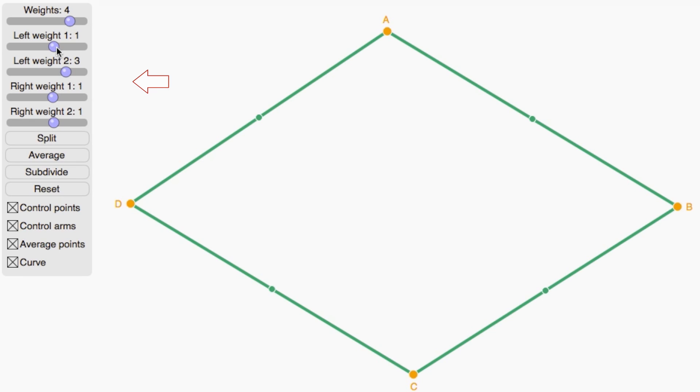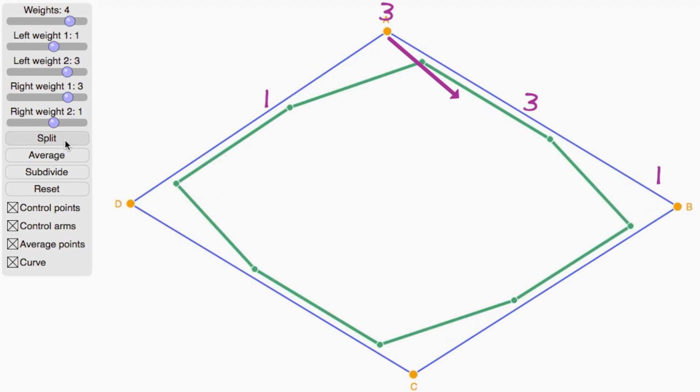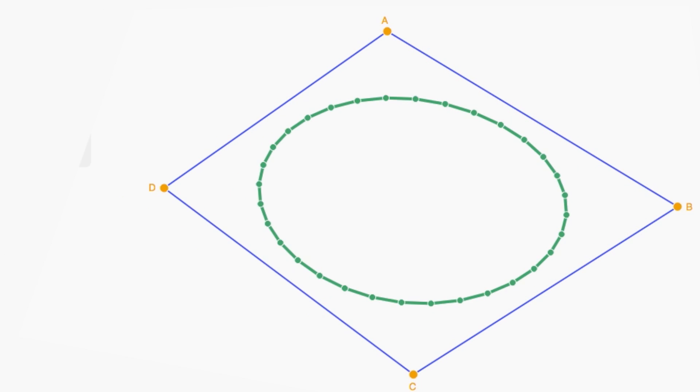I can even get smoother curves by picking the weights 1, 3, 3, 1, which are degree 4 curves, like y equals x to the fourth.